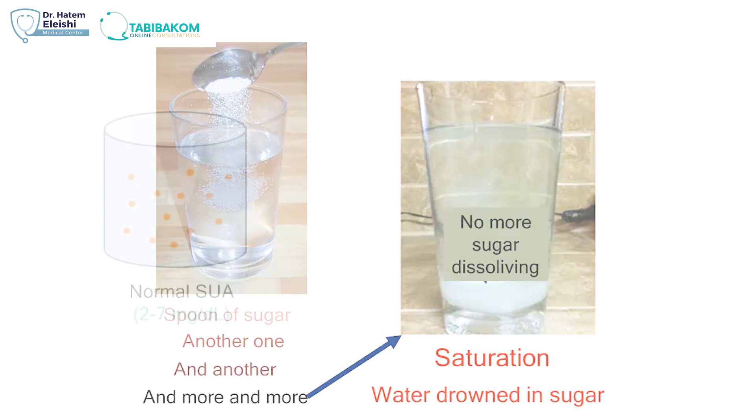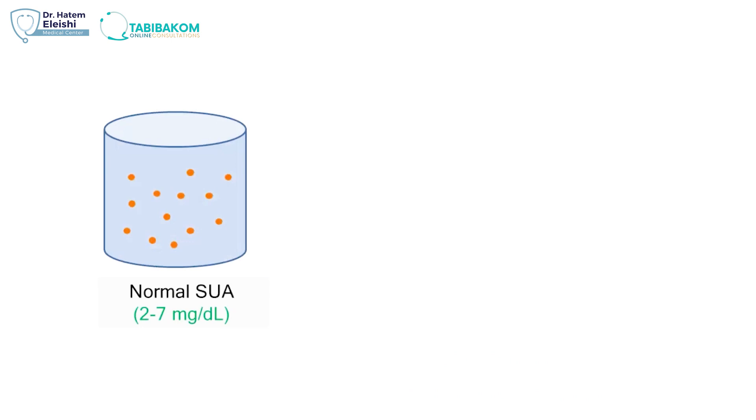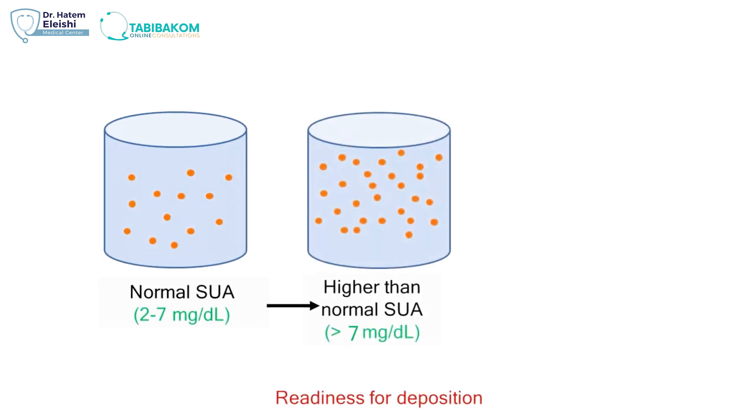Let's go to our body now. This is our body. This is the serum uric acid, the normal uric acid, two to seven milligrams per deciliter. If for any reason our uric acid goes higher than seven, this is the situation. It's higher than seven now, more than seven.